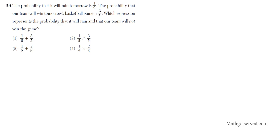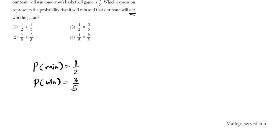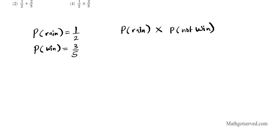Question 29: the probability that it rains tomorrow is 1/2, and the probability that our team will win the game tomorrow is 3/5. We need the expression that represents the probability that it rains AND that our team will not win. Remember: 'and' means multiply. We need to find the probability of not winning.